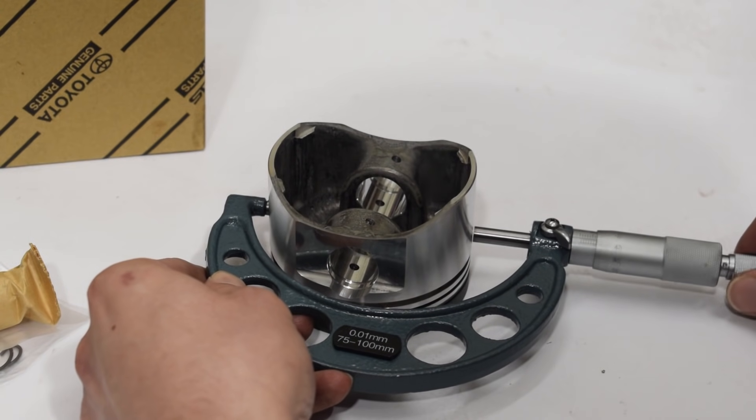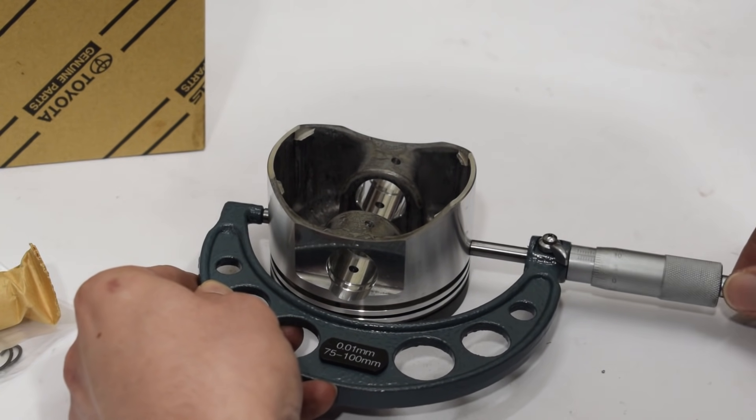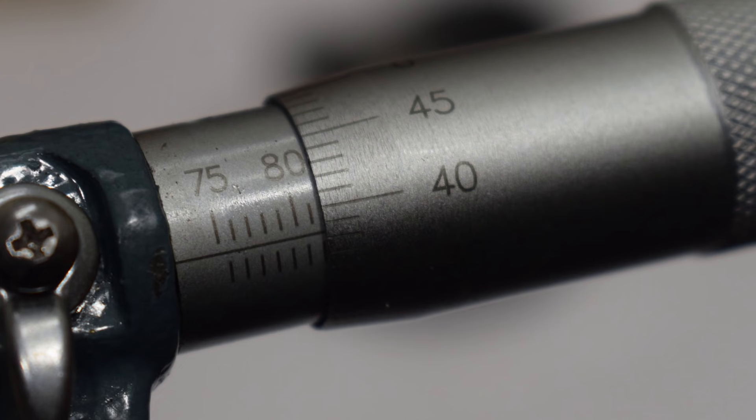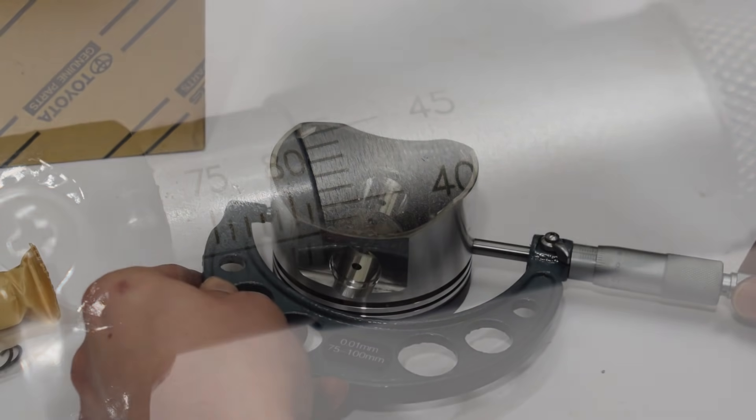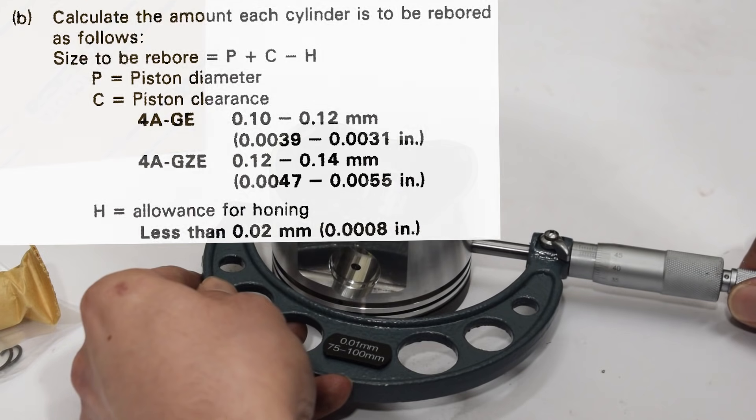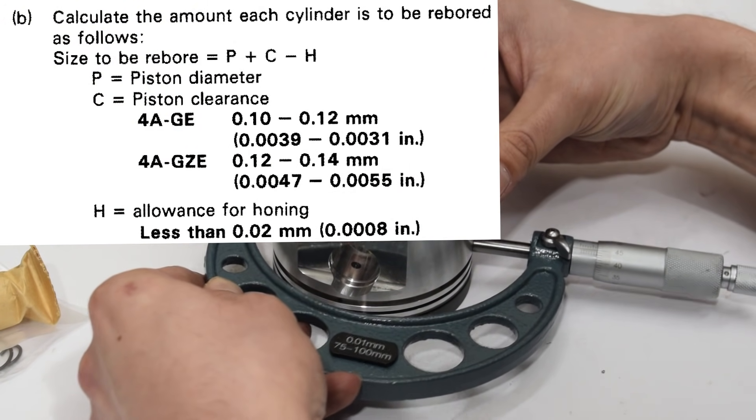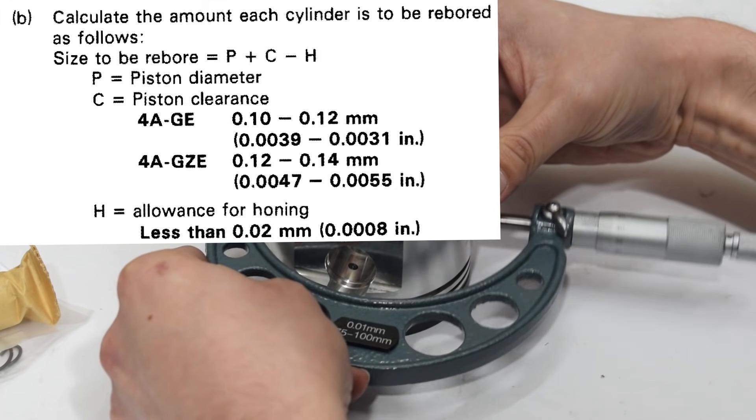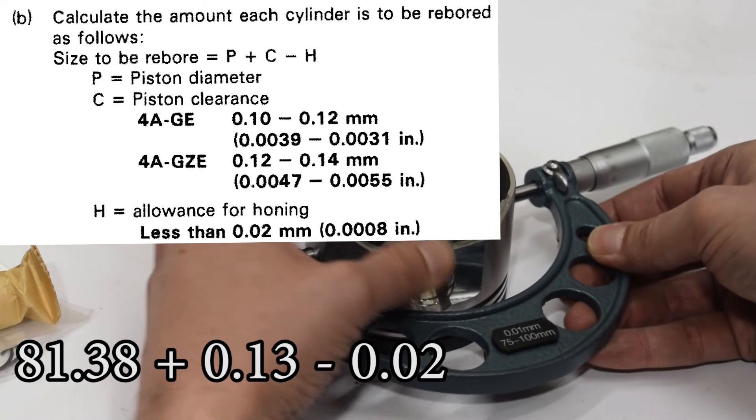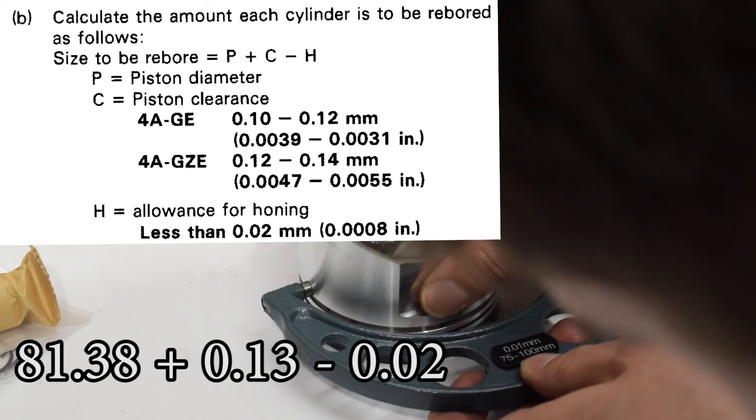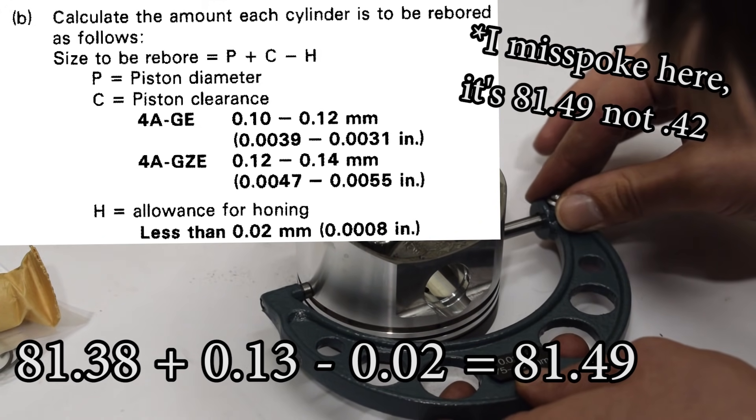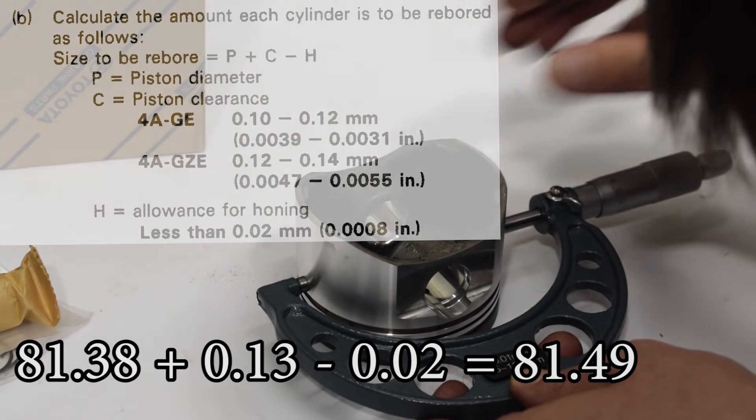When measuring, always use the small knob on the micrometer to prevent overtightening and a false measurement. Our piston comes in at just above 81.38mm. I would call this somewhere around 81.38 but we can round it down to 81.38. Our factory service manual gives us a formula for determining our new bore size. It's the piston diameter plus piston clearance minus the allowance for honing. In our case that's 81.38 plus 0.13 since these are supercharged 4AGZE pistons we're using and then we deduct 0.02mm from that. The result is 81.49mm and this is the new bore size you would need to achieve for this particular piston in cylinder number one.